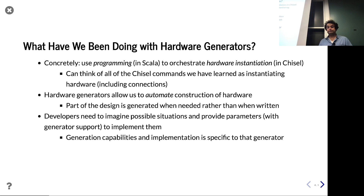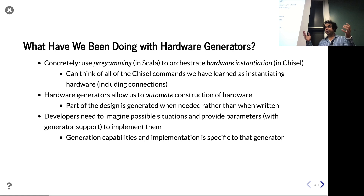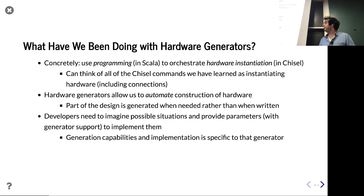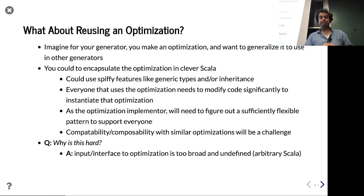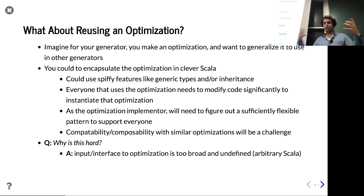As you start adding parameters, every parameter you add means you need to make sure you have support for that in the generator to actually handle those cases. As you make things more and more parameterized, those parameters and their implementations are pulled into the generator. Making that one generator super spiffy is your job — but if you're building a lot of generators, maybe you want to share these capabilities across generators. How do you do that?